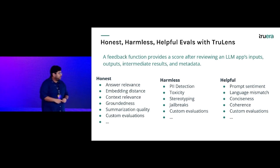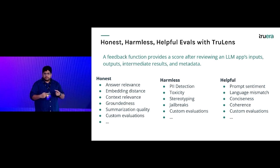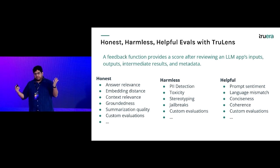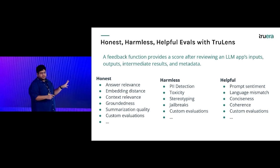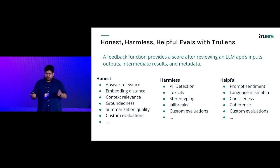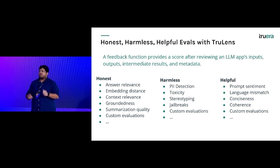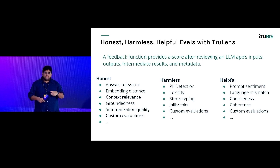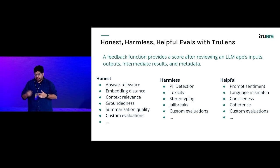For helpfulness, you check things like prompt sentiment, language mismatch — if you ask in English it should respond in English — and whether it's concise rather than rambling for a simple question. These are the kinds of evaluations we want to enable. There's no easy way to ask 'was this the right answer?' but you can ask: was this helpful, was it honest in the sense of being relevant, is it giving harmful information it shouldn't?